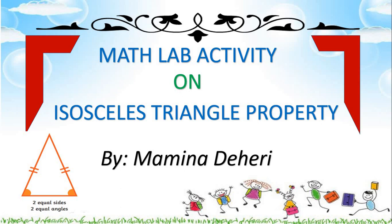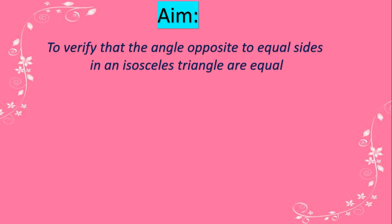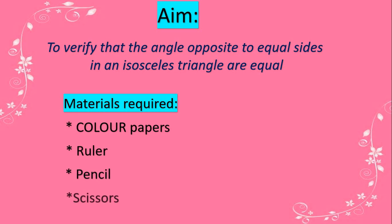Hello everyone, in this video we are going to learn about the isosceles triangle property with the help of an activity. The aim of the activity is to verify that the angles opposite to equal sides in an isosceles triangle are equal. Materials required: colored papers, ruler, pencil, and scissors. First, let us learn about isosceles triangles.